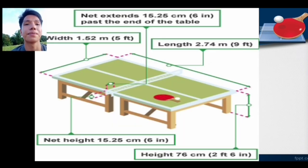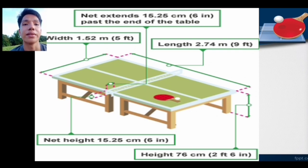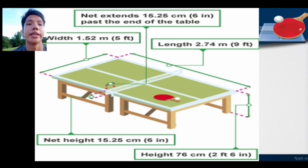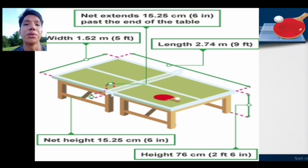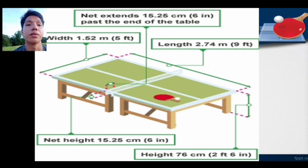This is the table diagram. The net extension — yung nakikita nyo na parang extension ng net dun sa table tennis — it is 15.25 centimeters or 6 inches past the end of the table. Nakikita nyo yung sukat dun sa table tennis. May sukat-sukat po yung table tennis. Yung wide po ng table is 1.52 meters or 5 feet.